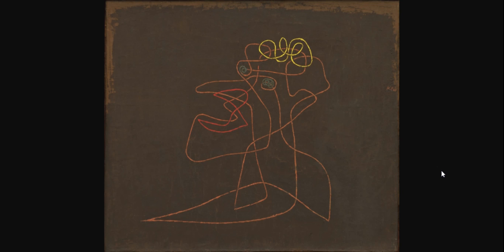This is Paul Klee's artwork known as The Mocker Mocked. It was done in 1930 and it's in New York, New York at the Museum of Modern Art. This is actually a painting, oil on canvas.